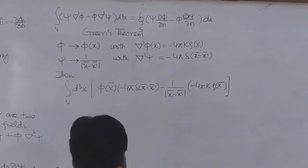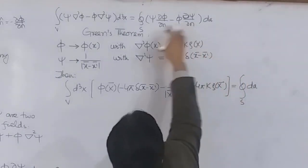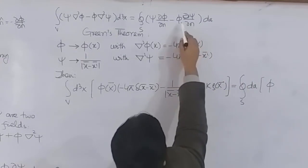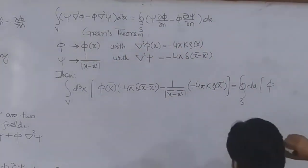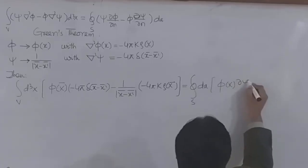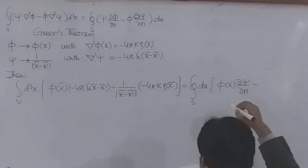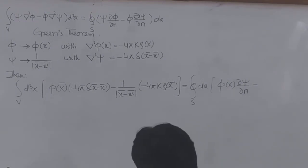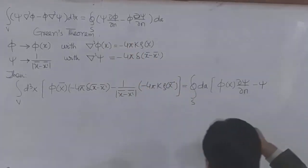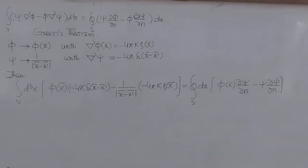This is equal to the closed surface integral dA. Now on the right-hand side I write φ ∂ψ/∂n and similarly minus ψ ∂φ/∂n. So our equation has this form — the volume integral on the left and the surface integral on the right.